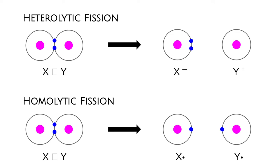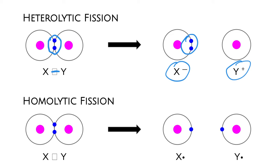Let's talk about the types of fission that can happen in a molecule. Starting with a molecule XY — in heterolytic fission, the two electrons that are shared in the bond both go to one of the two elements. So it would create, for example, an X minus ion and a Y plus ion if both shared electrons go to X.